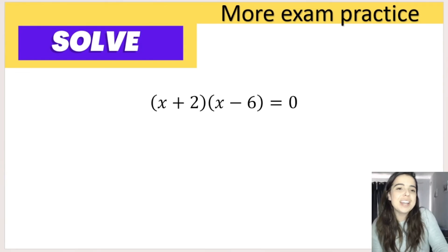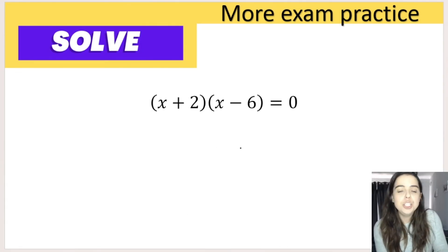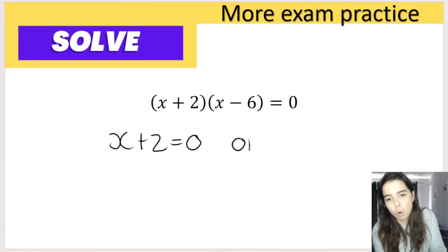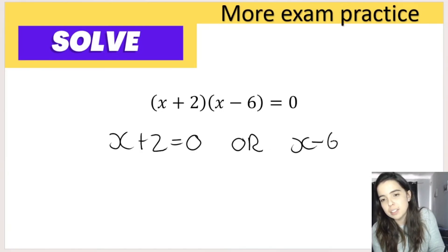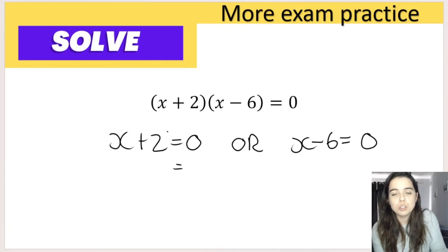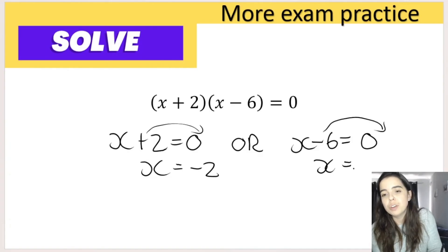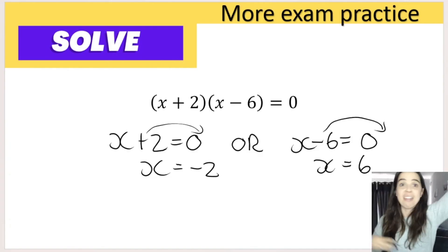This is another exam question I adapted, and here we already have two brackets equal to 0. So I'm going to say x plus 2 equals 0, or x minus 6 equals 0. Then solve: x plus 2 equals 0, so x equals negative 2. Or x minus 6 equals 0, so x equals positive 6. That's your answer.